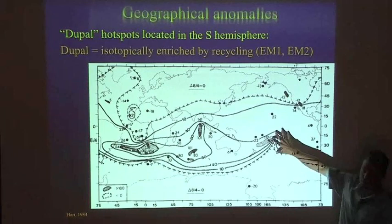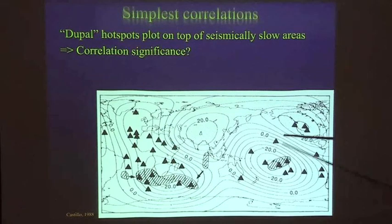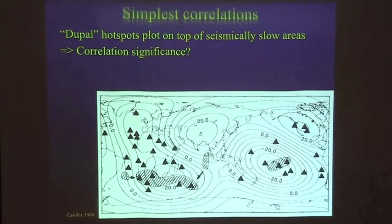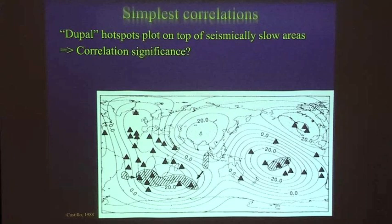In 1988, Bacastillo pointed out that if you focus on those Dupal hotspots, they actually plot on top of what I think is one of the old Harvard models — essentially seeming to correlate by eye with where the seismic slow zones are, what we're now calling LLSVPs. This is one of the first papers where people started pointing out a correlation. Again, this is done mostly by eye — the Dupal hotspots are drawn on top of the actual hotspot triangles.